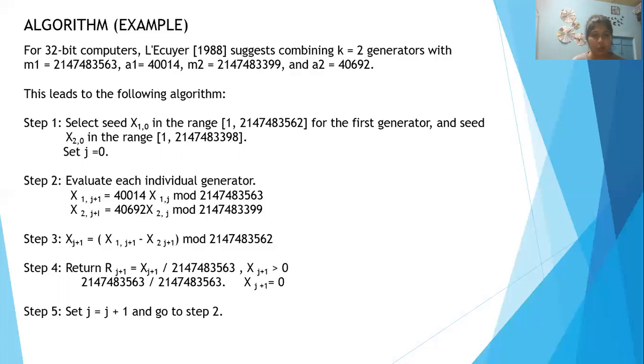if the value is greater than 0, the value calculated is X_j+1, which you calculated in step 3, divided by m_1, which is 2147483563.